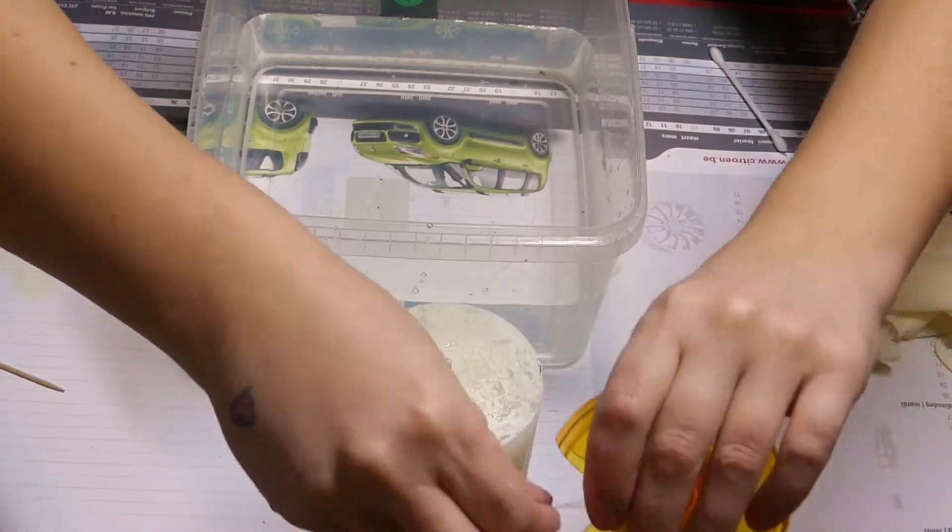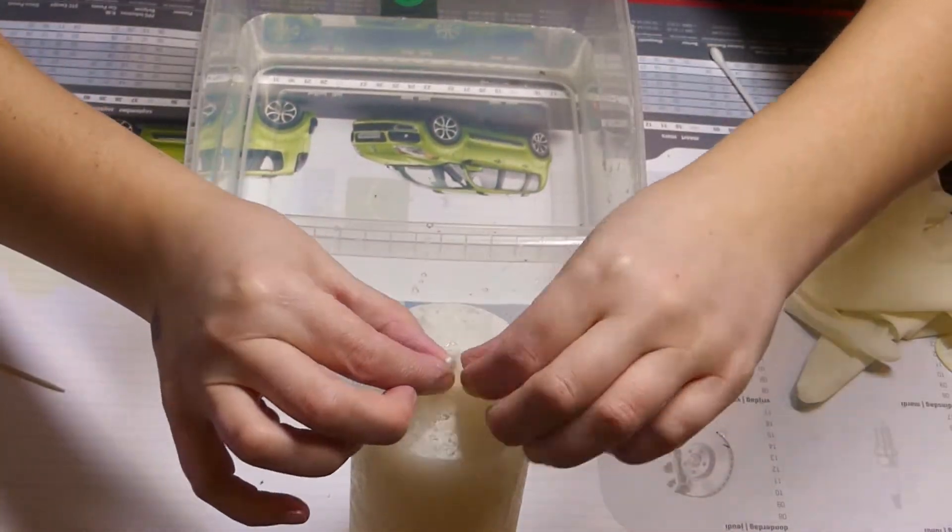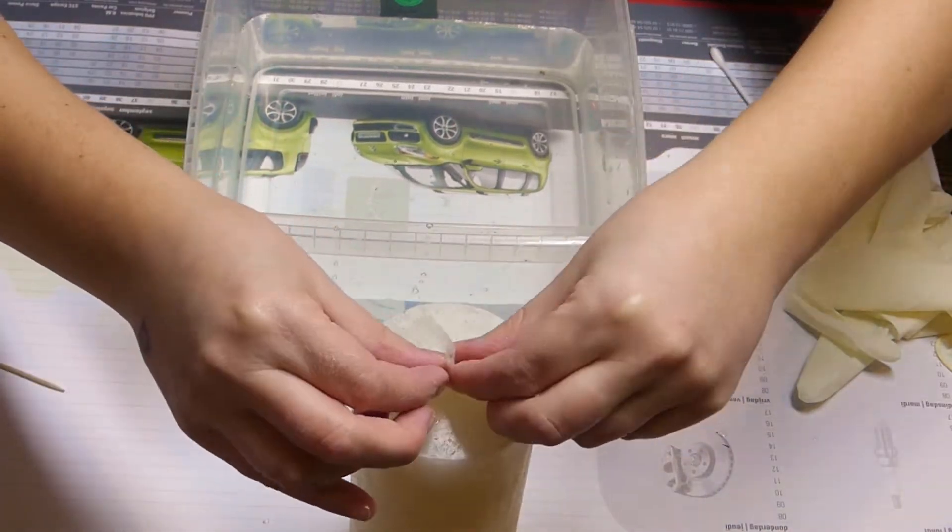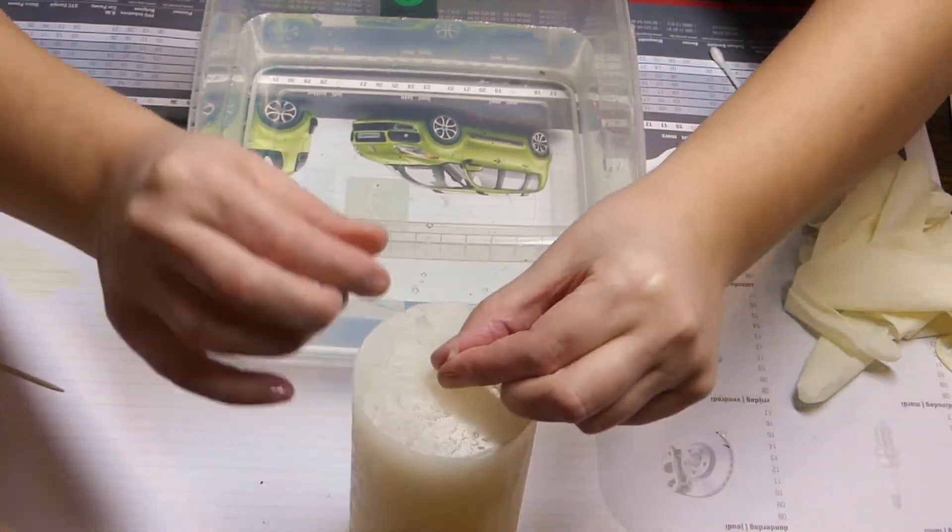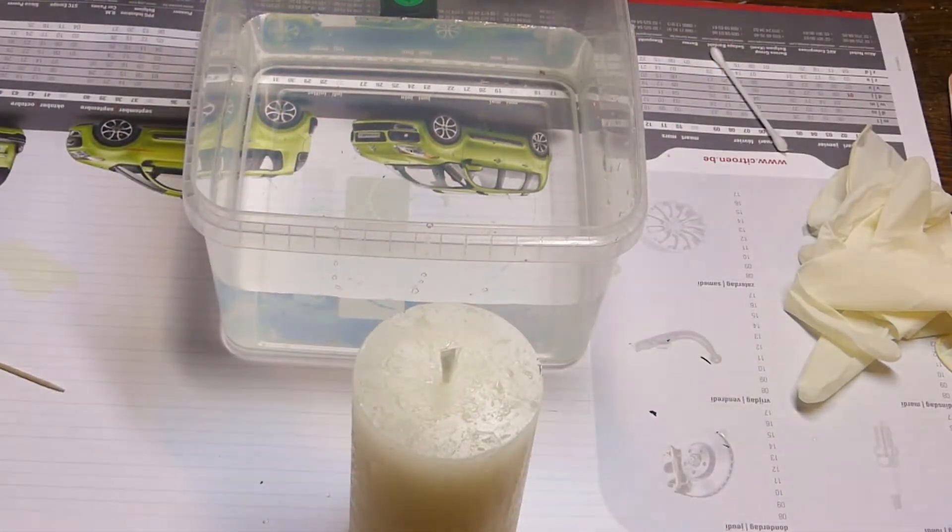Grab your candle and if you'd like to, you can cover the wick with some tape if you don't want paint to go on it. Fill your container about halfway with water and put on your rubber gloves.